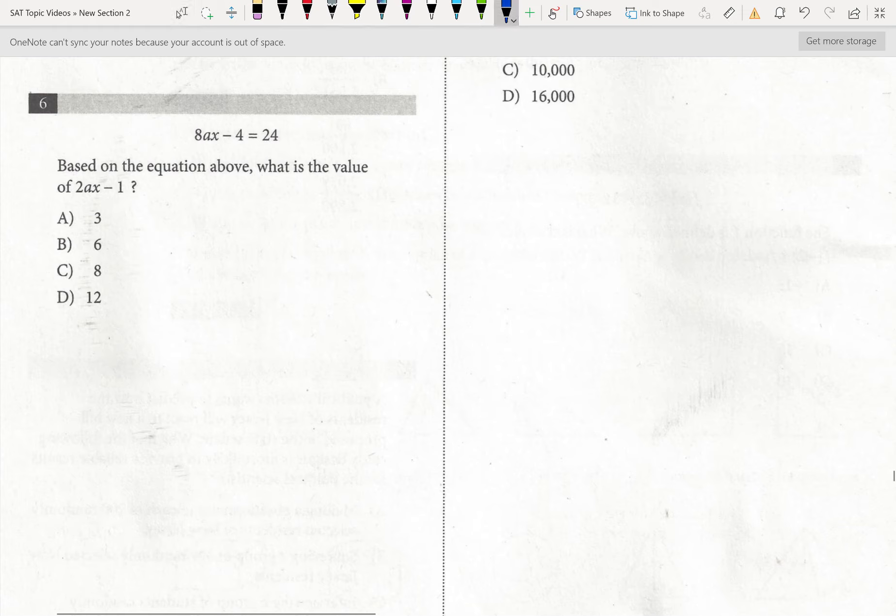The first thing I want to highlight on number six is that if you ever see something like this, if they ask for something that seems strange, like 2bx divided by three, or in this case 2ax minus one, they're up to something. So let's figure out what it is.